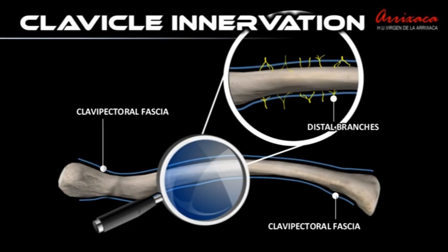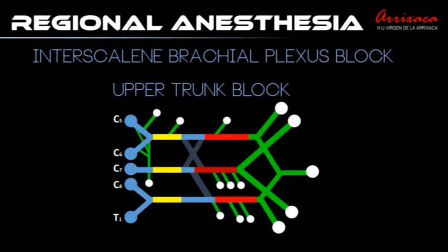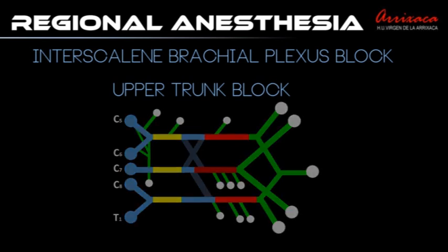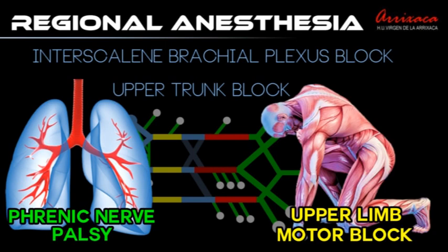The corresponding nerve endings reach the clavicle by penetrating the clavipectoral fascia. A combination of general and regional anesthesia is required to perform surgical procedures on the clavicle. Regional techniques include the interscalene block or the selective block of the upper trunk of the brachial plexus, both associated with phrenic nerve palsy and upper limb motor block.